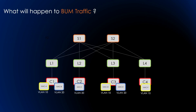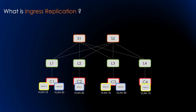When a PE or leaf receives flooded BUM traffic — broadcast, unknown unicast, and multicast — EVPN forwards those packets either via ingress replication or layer 3 underlay multicast. We'll discuss each approach and include the trade-offs. In ingress replication, the ingress leaf sends multiple copies of the packet to each egress leaf or PE. When C1 sends a BUM packet, L1 receives it, makes two copies, and floods them to L3 and L4 one by one. The primary benefit is that it keeps the underlay simple — only IP routing is required with no additional configuration.